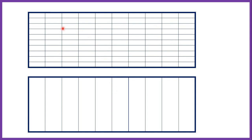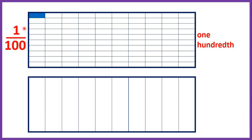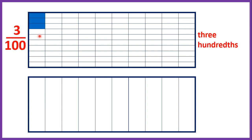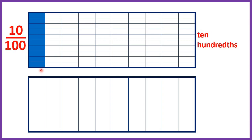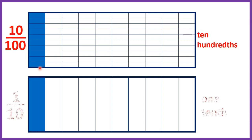Here we've got two different fraction bars. The top fraction bar is split into 100 pieces, so it shows us hundredths. The fraction bar below is split into 10 pieces, so it shows us tenths. So 1 hundredth is one part out of a hundred. We can count on: 2 hundredths, 3 hundredths, and so on up to 9 hundredths. Then if we've got 10 hundredths, we can see that's the same as having 1 tenth — the same amount is shaded in both rectangles. So 10 hundredths and 1 tenth are equivalent fractions.